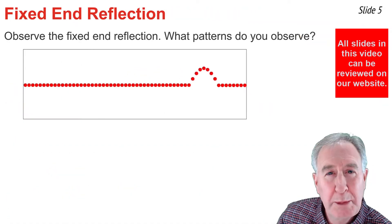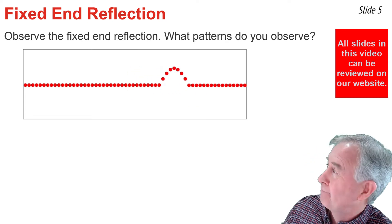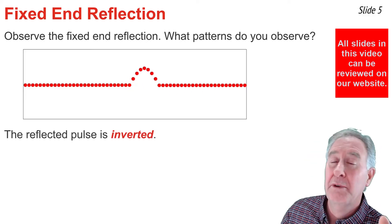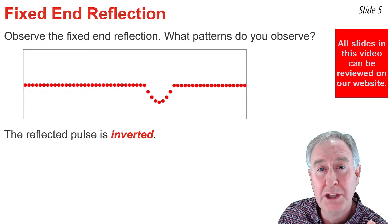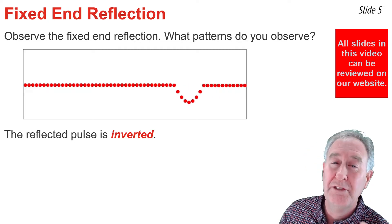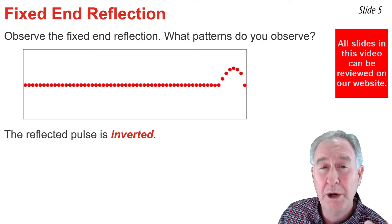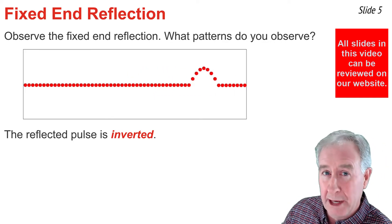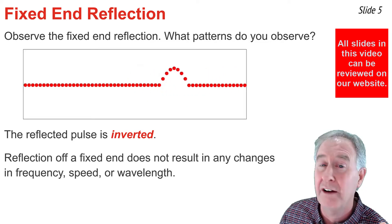Study this looping animation of a fixed-end reflection and see what patterns you can observe. A very obvious pattern is that the reflected pulse is inverted. When I say inverted, I mean that the particles of the medium were displaced upwards when the incident pulse traveled through it, but when the reflected pulse traveled through it, the particles were displaced downwards. We refer to that as an inverted pulse.